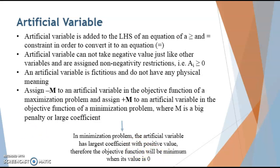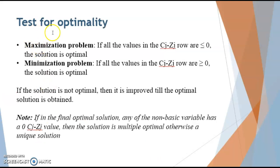Before moving to the question, we'll also quickly go through the test of optimality. In case of maximization problems, the values of Cj minus Zj should be less than or equal to 0, and in case of minimization, all values should be greater than or equal to 0. If it is not the case, we have to improve our solution till the optimal solution is obtained. Also, if any non-basic variable has a 0 in the Cj minus Zj row, the solution has multiple optima and is not unique.